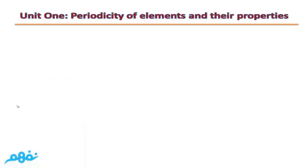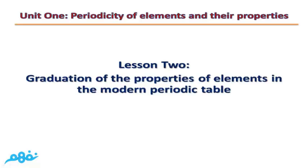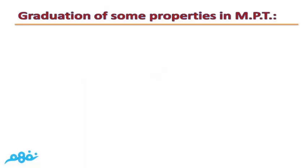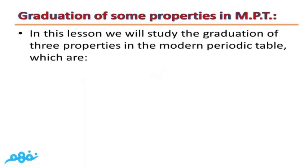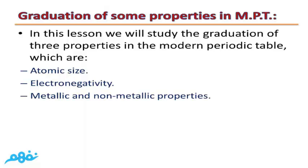Unit 1: Curiosity of elements and their properties. Lesson 2: Graduation of the properties of elements in the modern periodic table. In this lesson, we will study the graduation of three properties in the modern periodic table, which are: atomic size, electronegativity, and metallic and non-metallic properties.